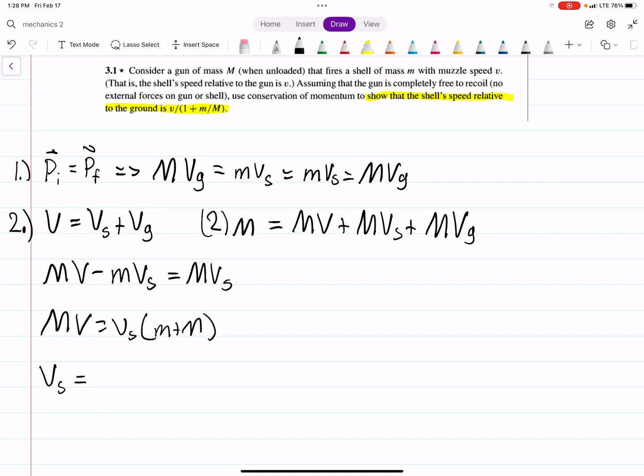Dividing over, we have vs = mV/(m + M). If we divide out the top and bottom by M, you get the final answer, which is what we wanted to prove.